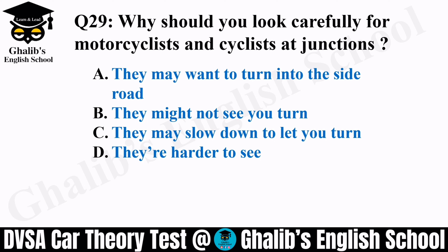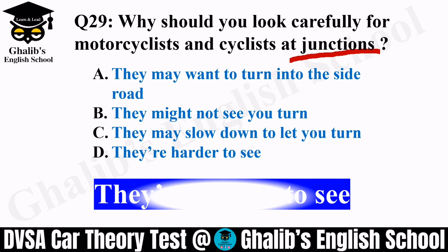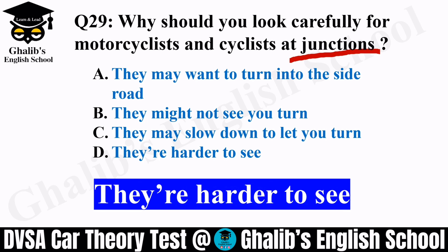Question 29. Why should you look carefully for motorcyclists and cyclists at junctions? Junctions are very busy, and motorcyclists and cyclists come very fast. Options: they may want to turn into the side road, they might not see you turn, they may slow down to let you turn, or they are harder to see. The correct answer is they are harder to see — they are fast and small, so drivers often don't realize how quickly they approach, and suddenly there is an accident.